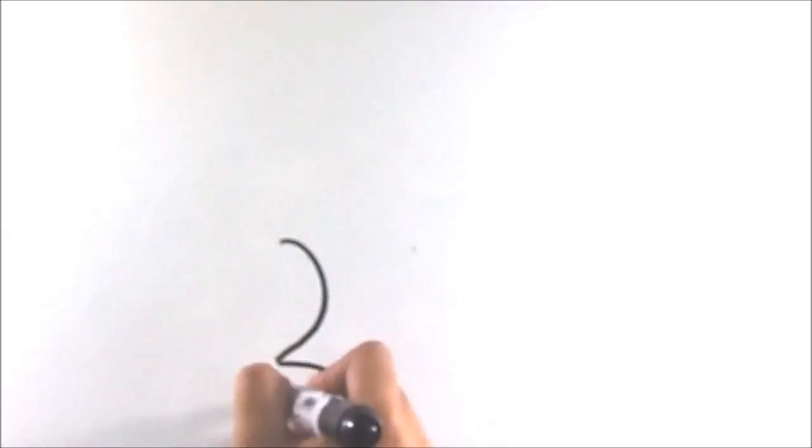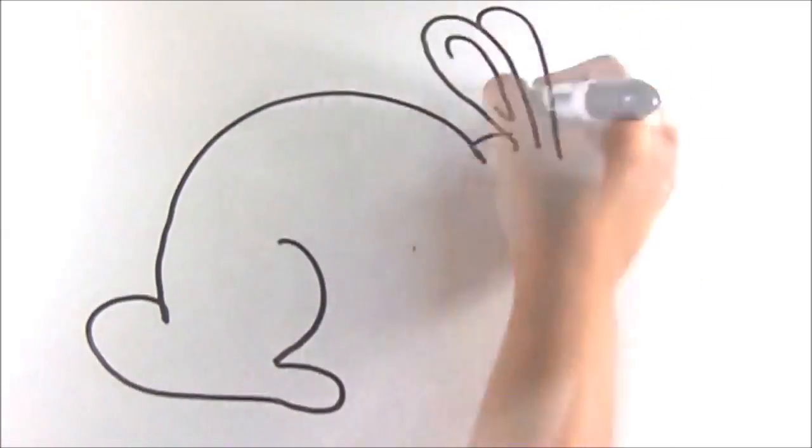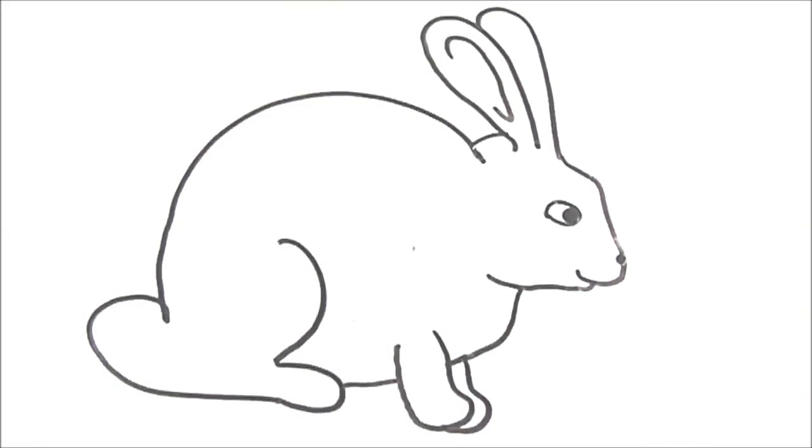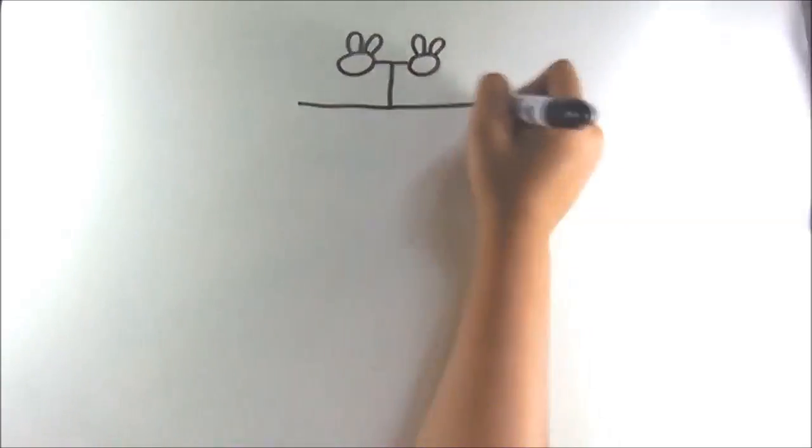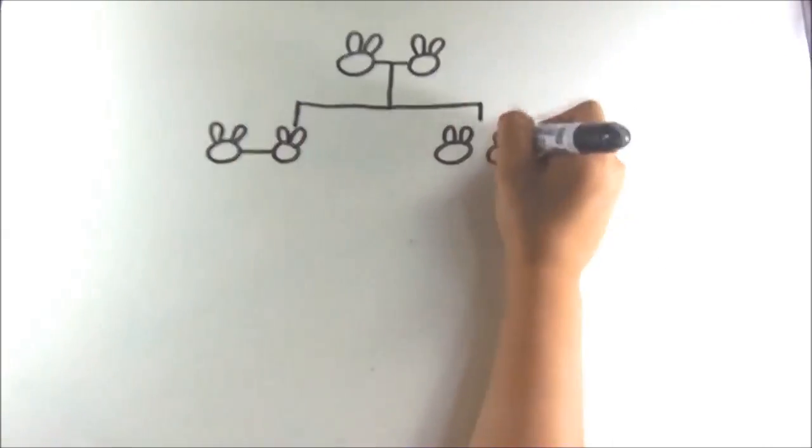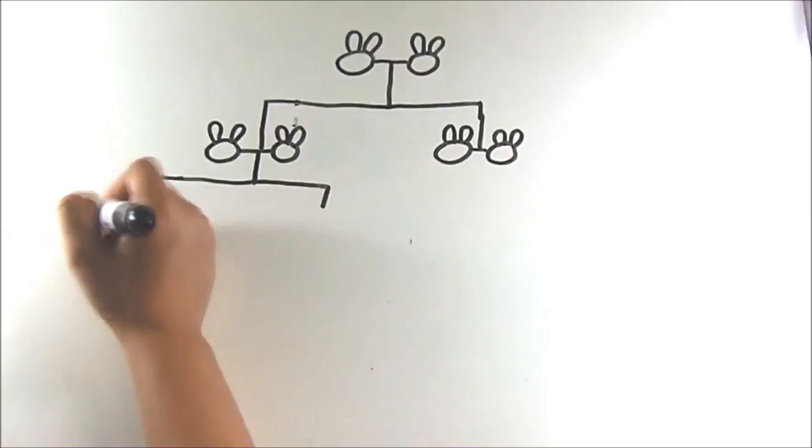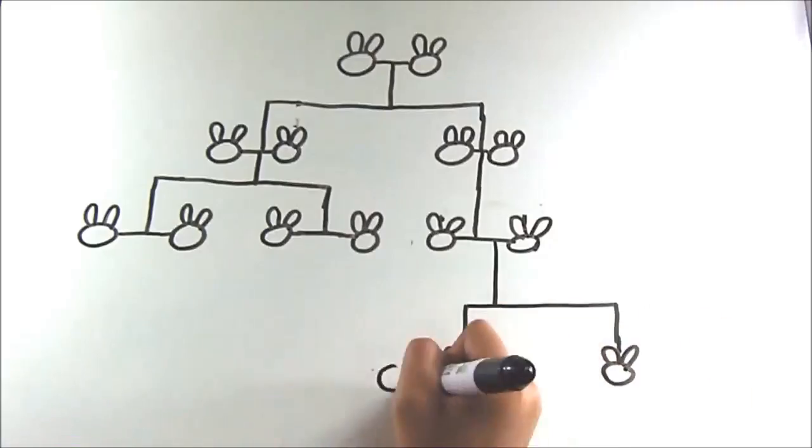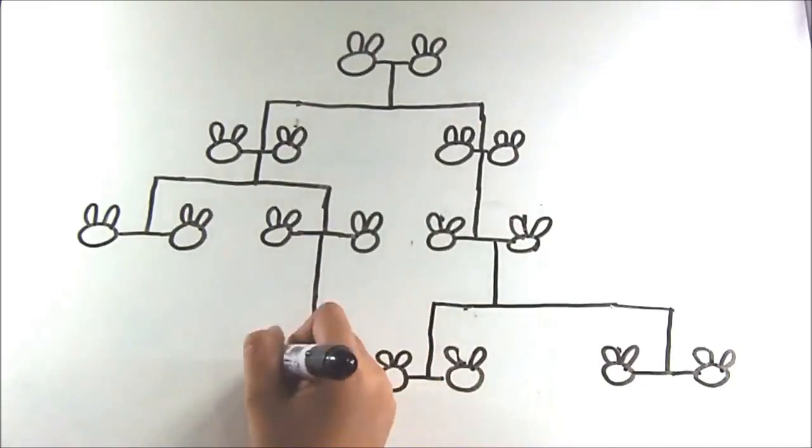Interestingly, Fibonacci discovered the sequence while studying rabbits. He observed the reproduction of the rabbits and discovered that after a pair of rabbits reproduce, it will give out two, and then three pairs of rabbits, and then five, and then eight, thus the Fibonacci sequence.